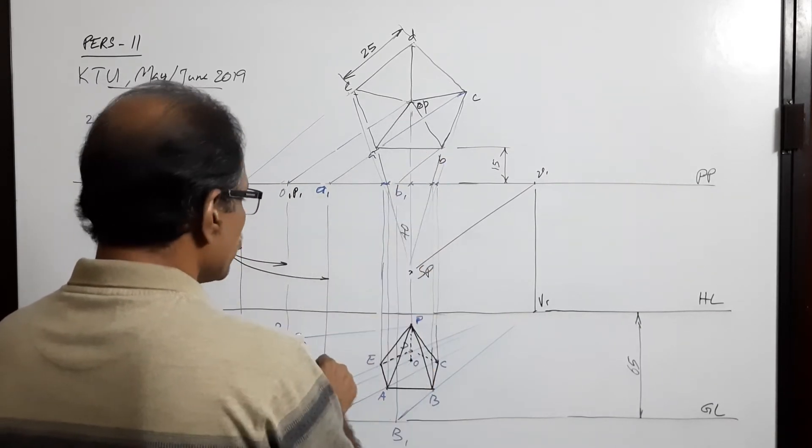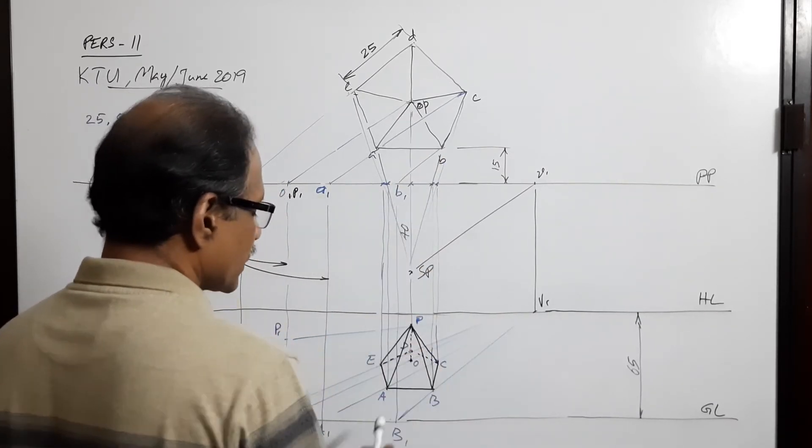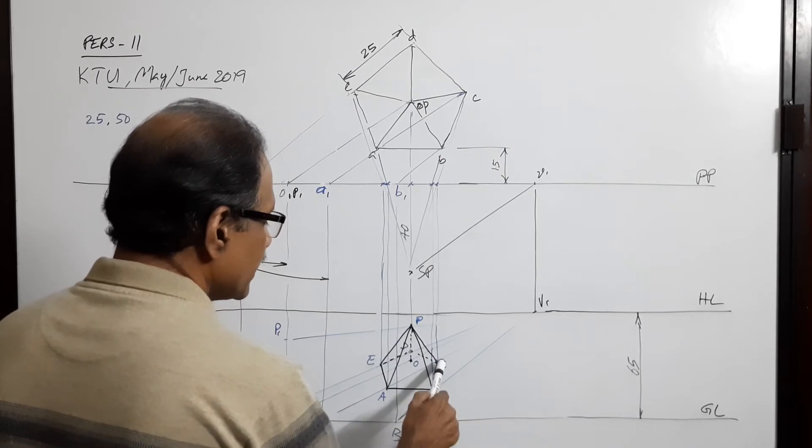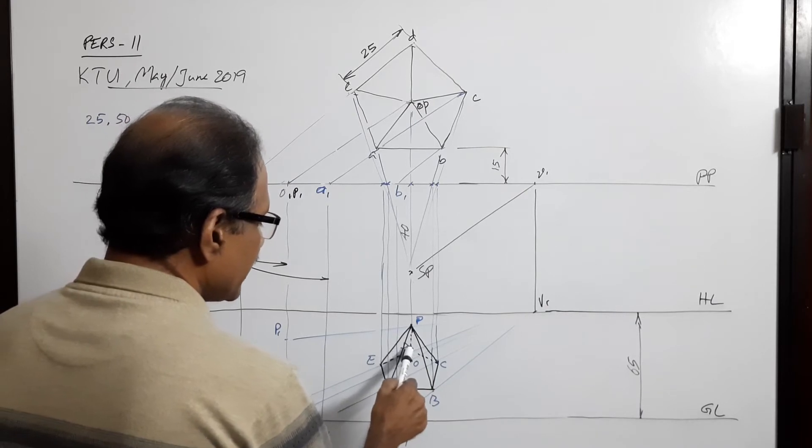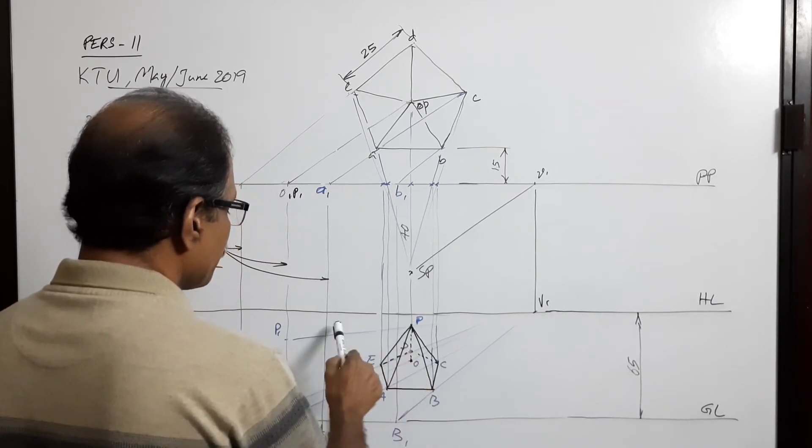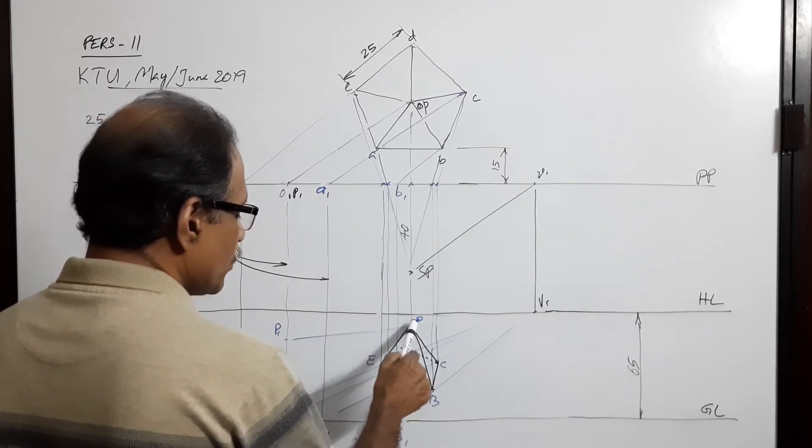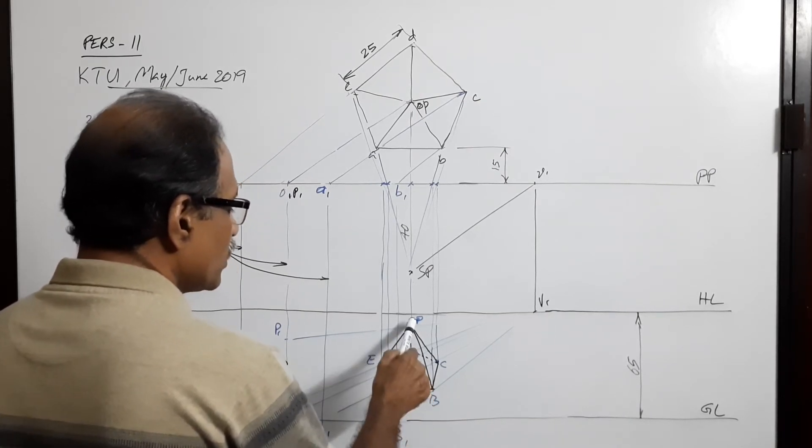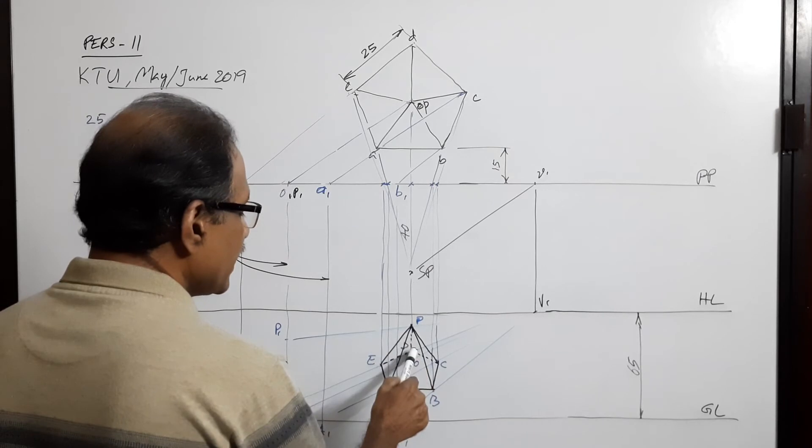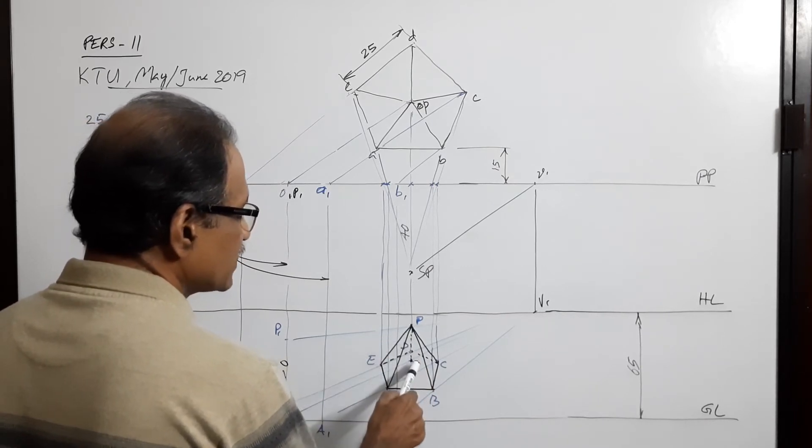Connect A, B, C, D, E, and A. DE and DC are dotted. P is the apex. Join P to E, P to A, P to B, P to C (firm lines). P to D is dotted. P coincides with the axis which is OP.